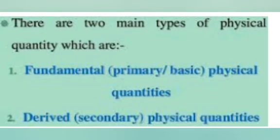There are two types of physical quantities. First one: fundamental physical quantities, and second: derived physical quantities.